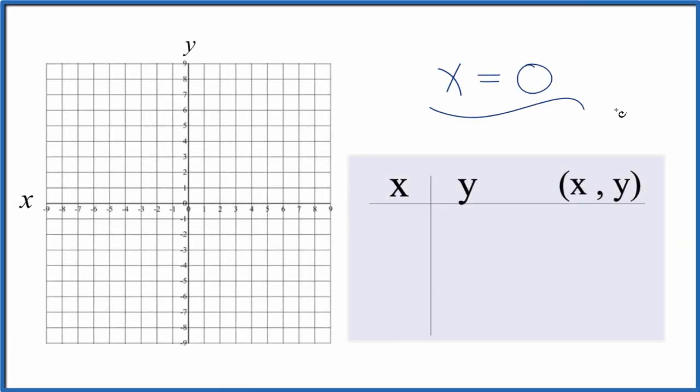Let's graph the equation x equals 0. So think of it this way, x is always equal to 0. So let's just put some zeros in here for x. And no matter what value we have for y, x equals 0.